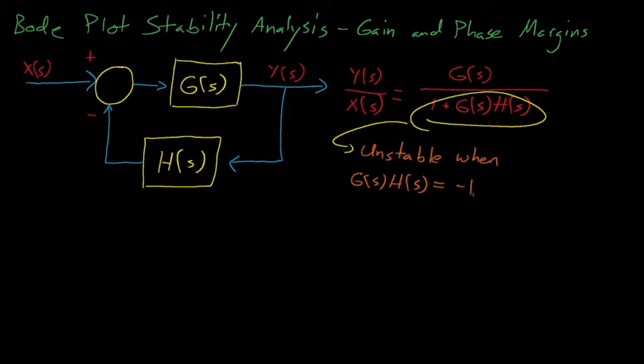Well, this function will equal negative 1 if the gain of our system is equal to 1, or 0 decibels, and if our phase is equal to 180 degrees, or negative 180 degrees, which is the same thing.